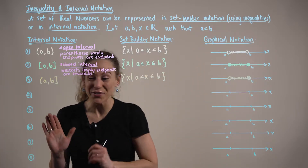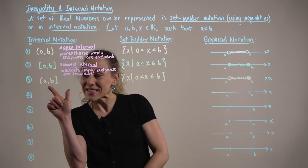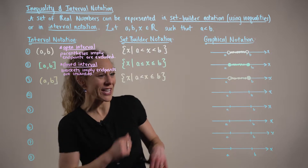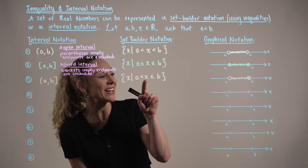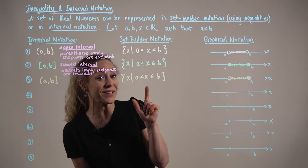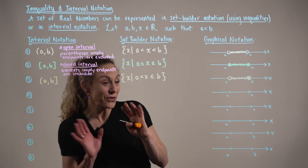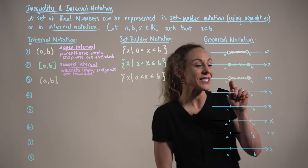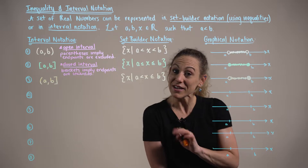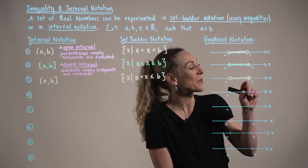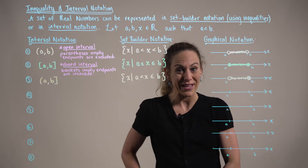Our next interval is referred to as a half-open or half-closed set. In set builder notation we have the set of all real numbers x such that x is strictly greater than a and less than or equal to b. On our graph we have an open dot at endpoint a, implying x cannot equal that endpoint, versus a closed dot at endpoint b.